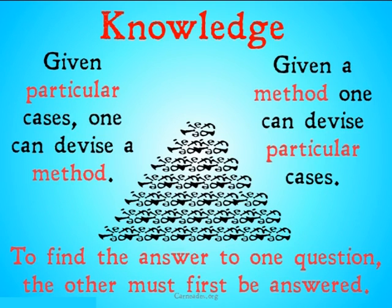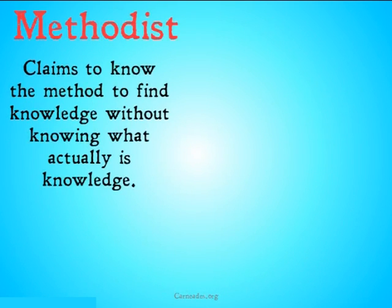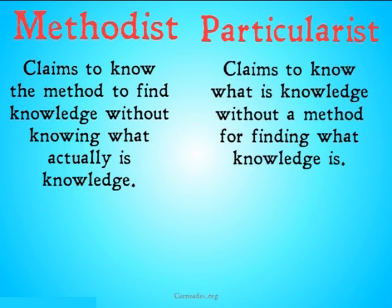Therefore, just as we could not divide the grains of sand without a method or a particular case, we cannot divide the beliefs we have into knowledge and not knowledge without a method or a particular case. The methodist claims to know the method to find knowledge without knowing what actually is knowledge — basically saying 'I have a method, I'm going to stick with that method, even though I'm not sure what is and what isn't knowledge.' The particularist, on the other hand, claims to know what is knowledge but doesn't claim to have a method for finding it — saying 'I know this and I don't know this, and the method for differentiating those does not matter.'